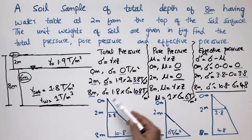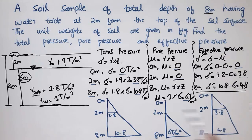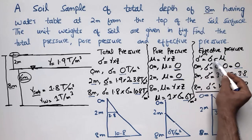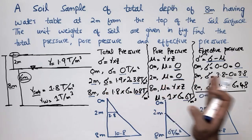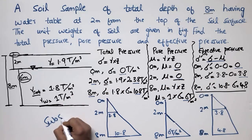These were the three pressure profiles. The total pressure is the highest, reaching 10.8 ton per square meter at the bottom. The pore water pressure is less than the total pressure. The effective pressure profile is less than the total pressure because we subtract pore water pressure from total pressure to get effective pressure. I hope you understand how to find these three pressures. Please subscribe for daily civil engineering videos — thank you for watching.